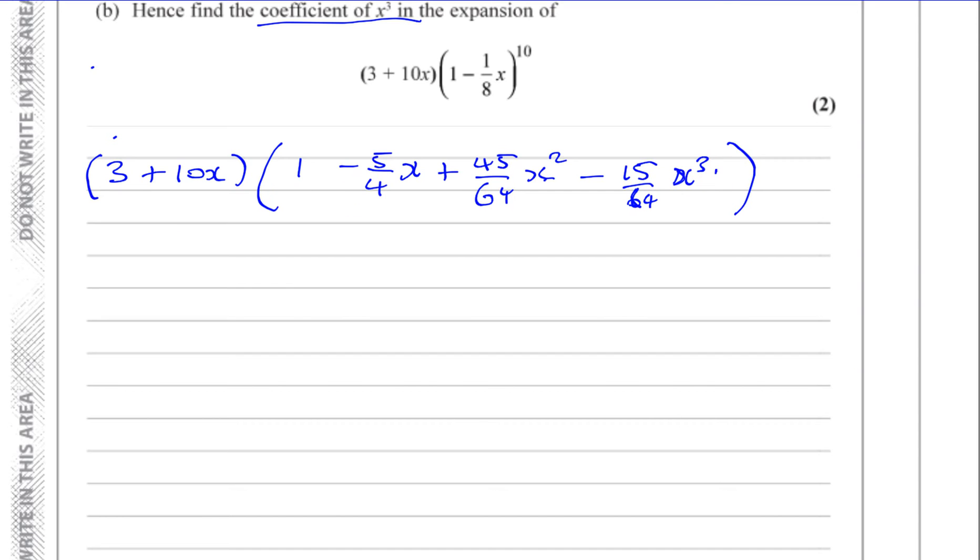So if we think about what we can multiply in order to get the x cubed coefficient, well, 3 times minus 15 over 64x cubed will give you an x cubed term. That's one of them. And you'll also have 10x times the x squared term, so 10x multiplied by 45 over 64x squared.